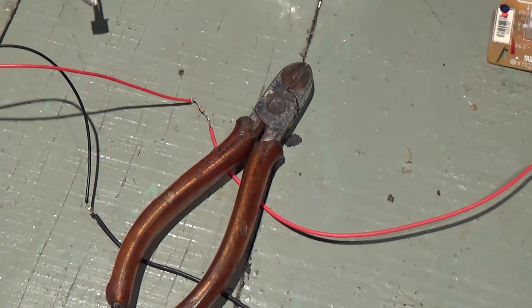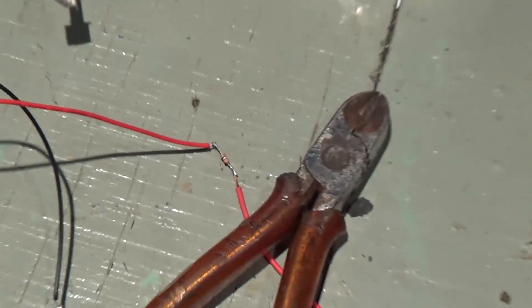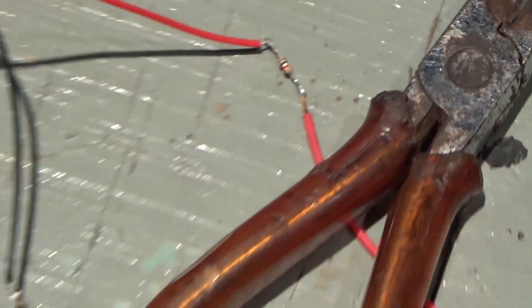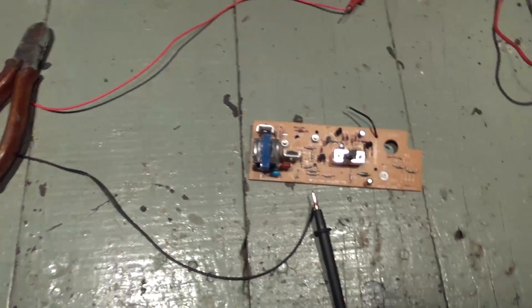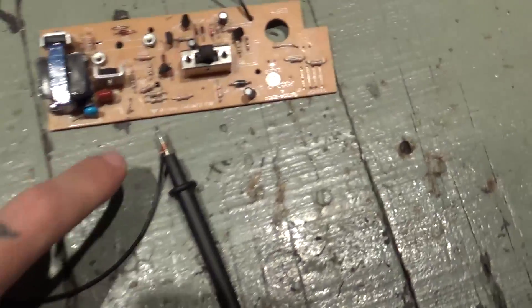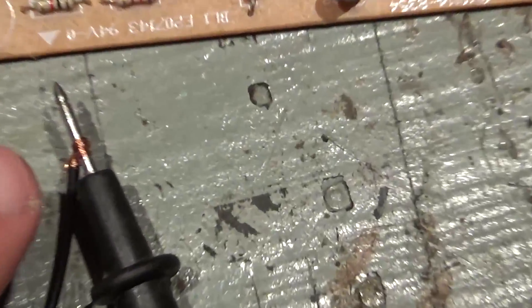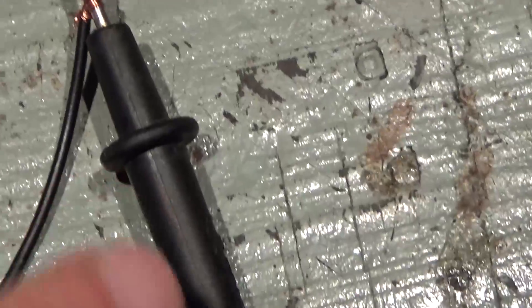And those two wires, the red one having the 1K resistor and the black one straight, they go to my multimeter.